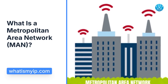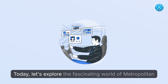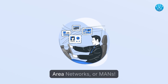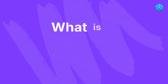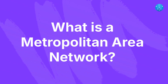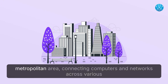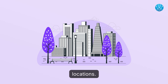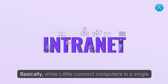What is a metropolitan area network? A MAN is a network that spans a metropolitan area, connecting computers and networks across various locations. It covers an area larger than a local area network but smaller than a wide area network.